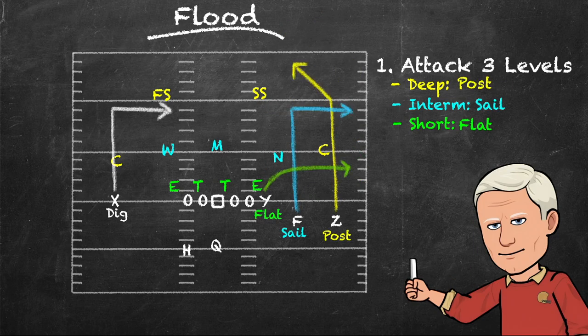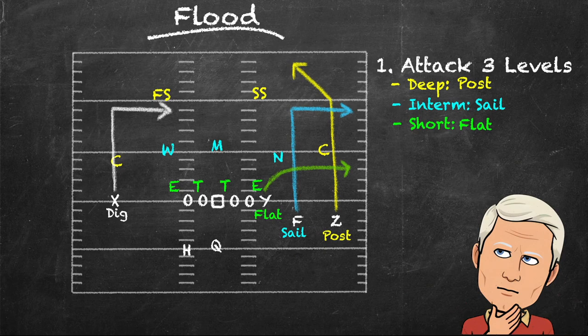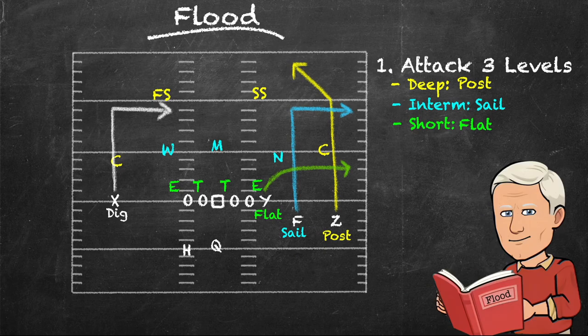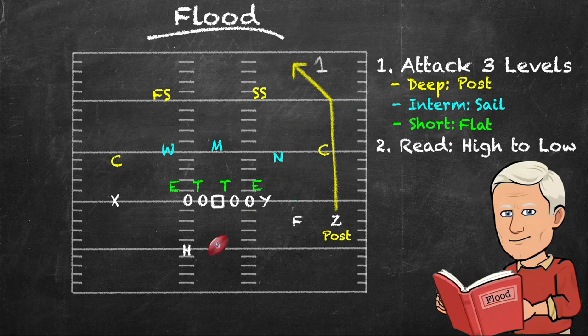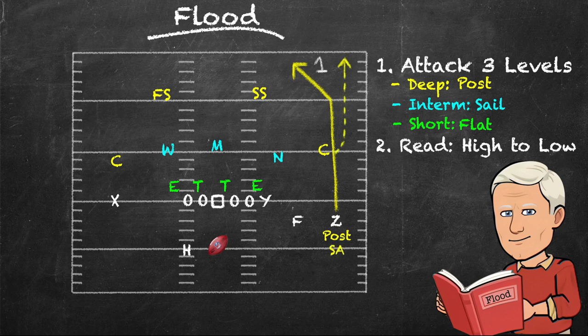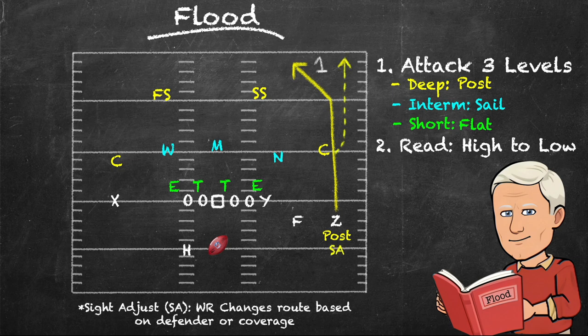Let's go back to the original route combination. We read this from deep to intermediate to shallow, and then to the backside dig. If our receiver gets a step on the cornerback or the deep safety's coverage allows for space, we'll take a shot downfield. Usually, there's a side adjust attached to the vertical route. A side adjust means the receiver will change the route being run based on how the defense or specific defenders are playing.